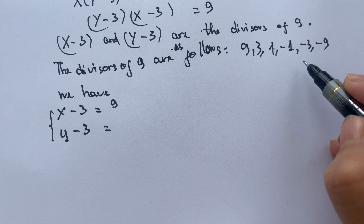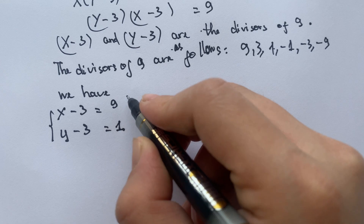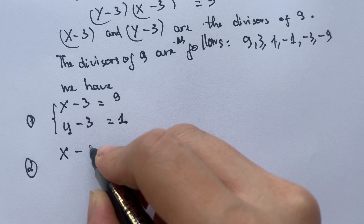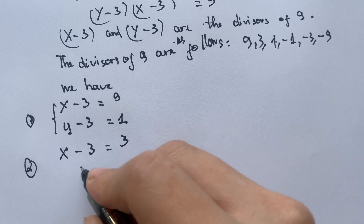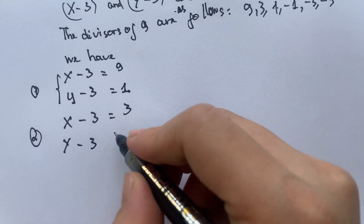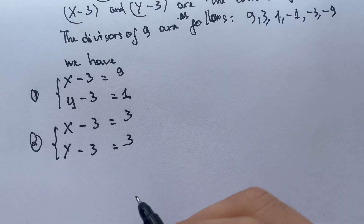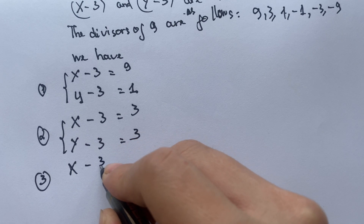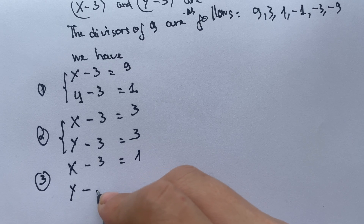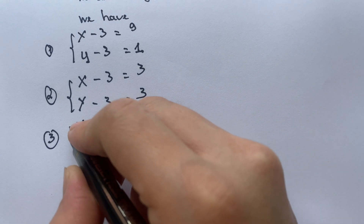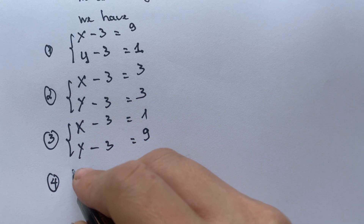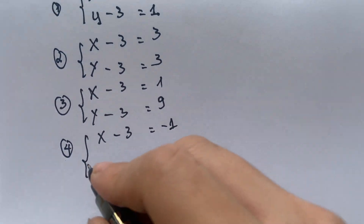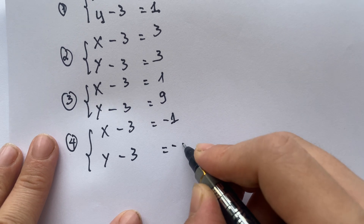So for case 1: y minus 3 equals 1 and x minus 3 equals 9, since 1 times 9 equals 9. For case 2: y minus 3 equals 3 and x minus 3 equals 3. For case 3: x minus 3 equals 9 and y minus 3 equals 1. For case 4: x minus 3 equals minus 1 and y minus 3 equals minus 9.